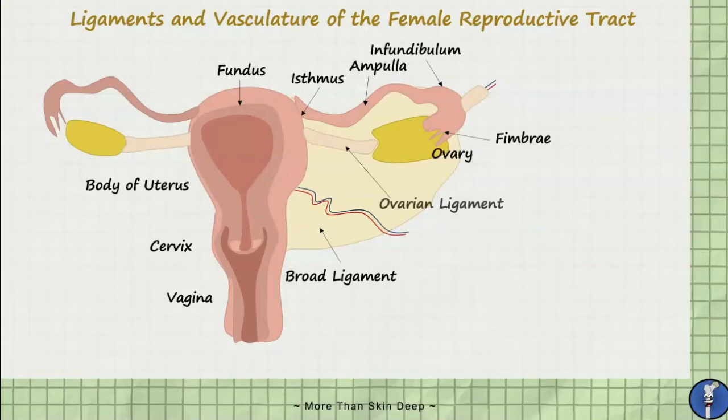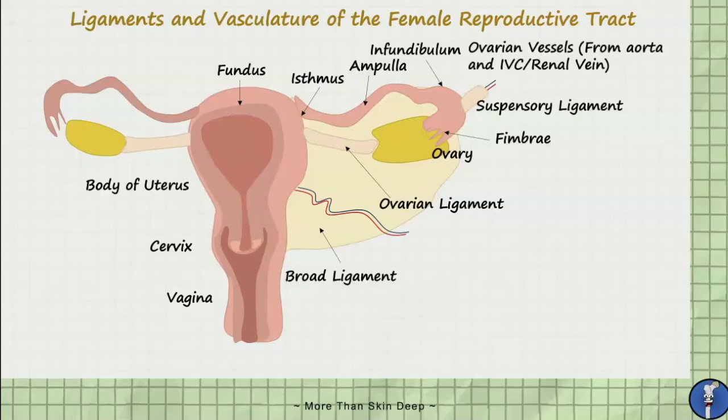The ovarian ligament connects the ovary to the uterus while the suspensory ligament of the ovary contains the ovarian vessels. The uterine vessels, which branch off of the internal iliac vessels, are contained within the cardinal ligament.